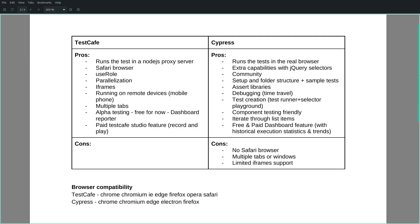Moving on, let's continue with framework-specific pros and cons. TestCafe runs the tests in a Node.js proxy server and Cypress runs the tests in the real browser. It means that Cypress tests have access to the real DOM elements, but in TestCafe the communication between the tests and the DOM elements must be serialized.